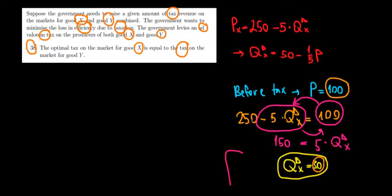Now what do we know about this? If we want to minimize the loss in efficiency, we want to have the tax for good X multiplied with the elasticity of demand for good X equals to the tax of good Y multiplied with the elasticity of demand for good Y.